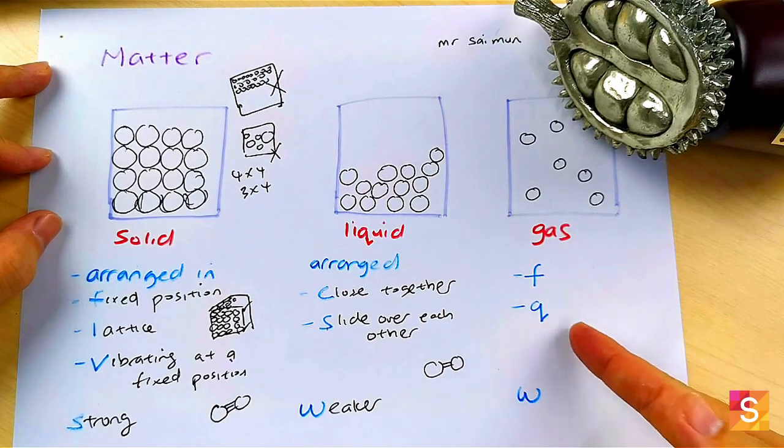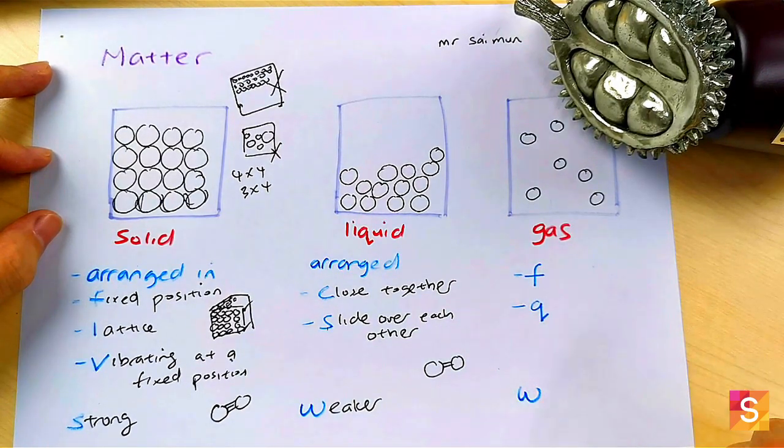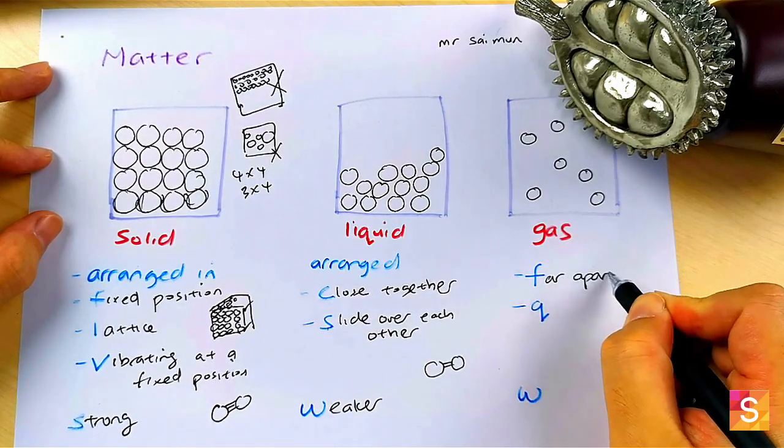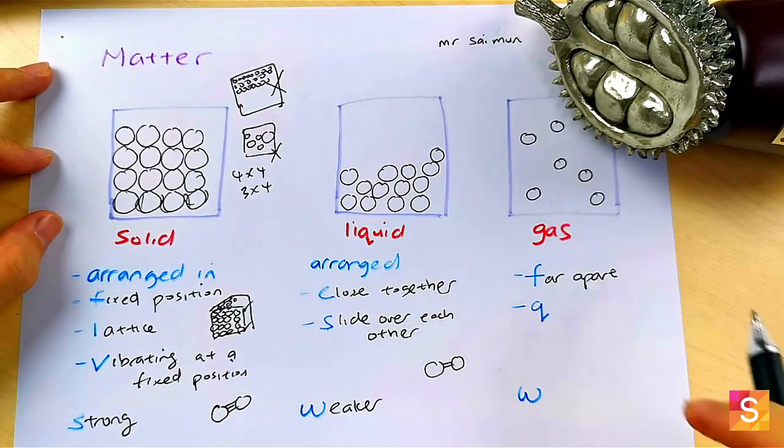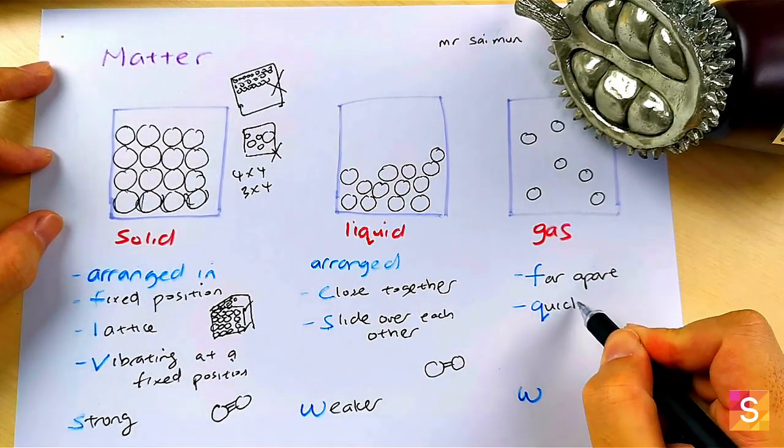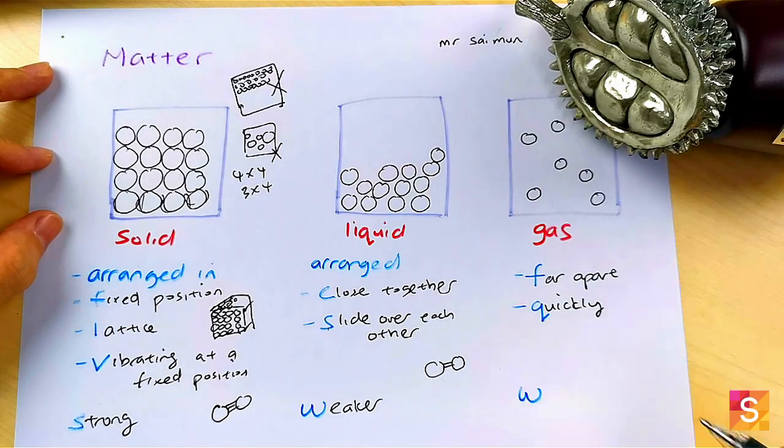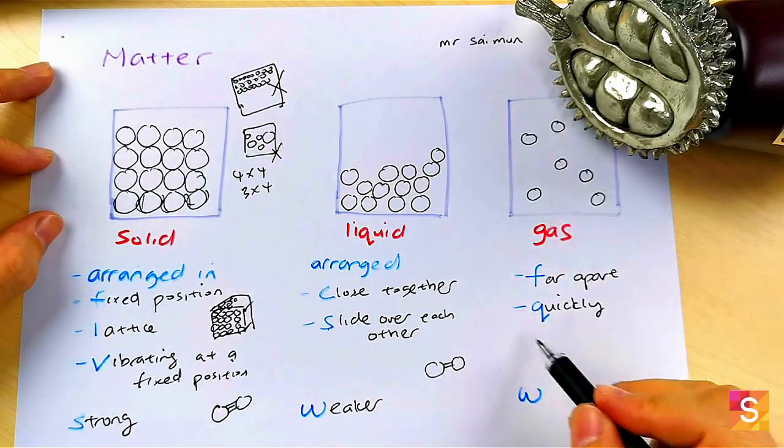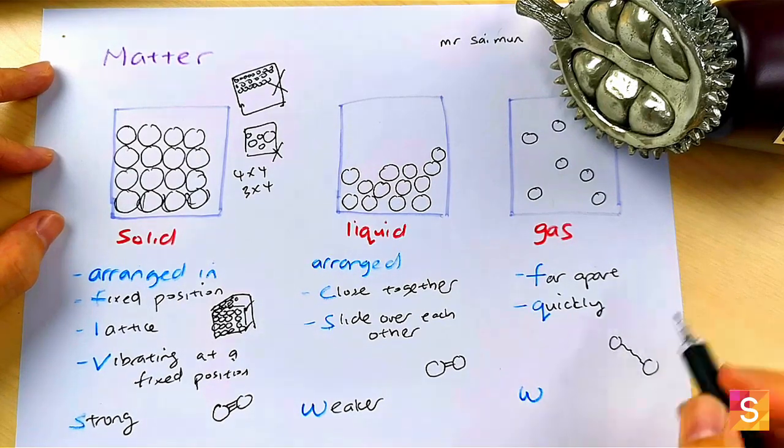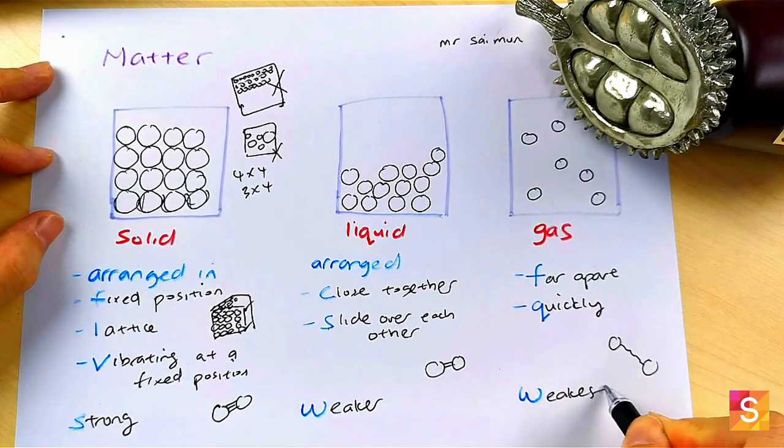So what happens for a gas, they ask you to explain their arrangement and then the motion. They are very far apart, one mark keyword exactly like this. And then they also move very quickly among each other. If they ask what is the force, why are they so far apart? Because their force is very weak, so it's among the weakest of the solid, liquid and gas.